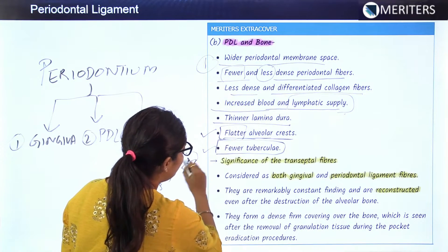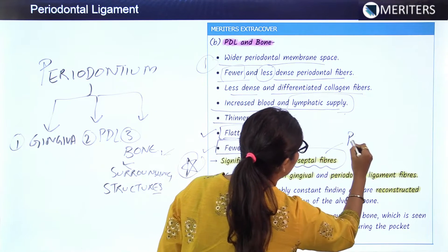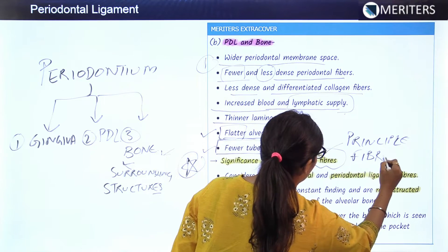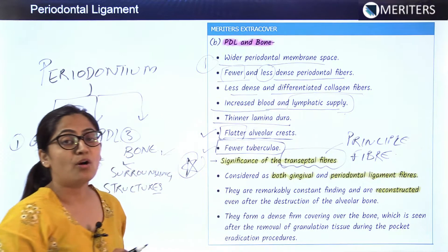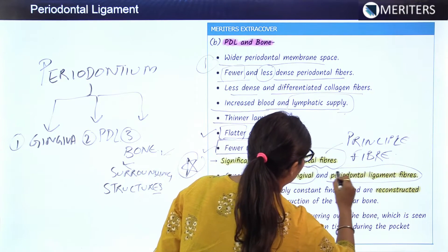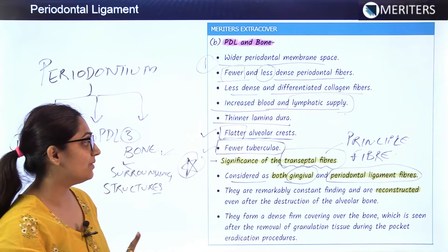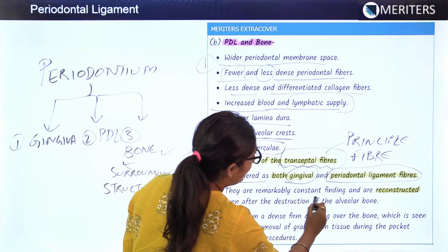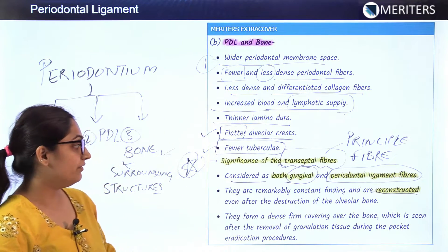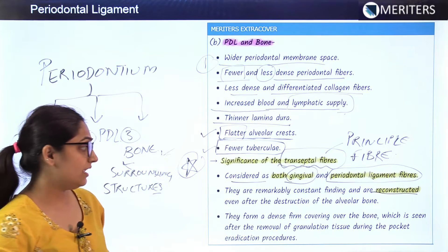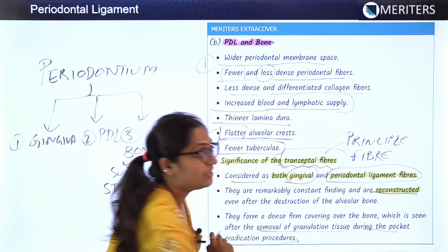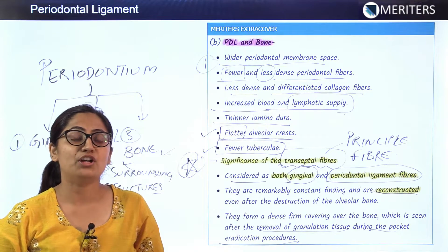Another important point is the significance of the transeptal principal fibers. They have the important property of regenerating, and are considered both gingival and periodontal ligament fibers. They are a remarkably constant finding - they are reconstructed even after the destruction of alveolar bone, forming a dense covering even after removal of granulation tissue during pocket eradication procedures.